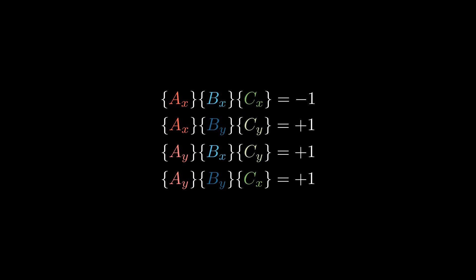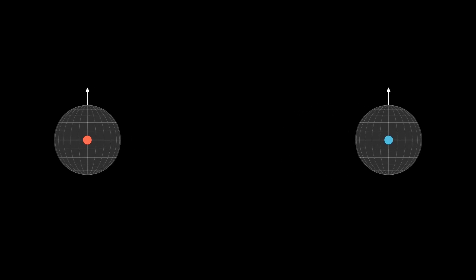Let's review our original assumptions. We assume locality when we put particles A and B, for example, so far apart that no signal from A can reach B in time. So because of that, particle B, its result cannot depend on anything that happened at the location of A.